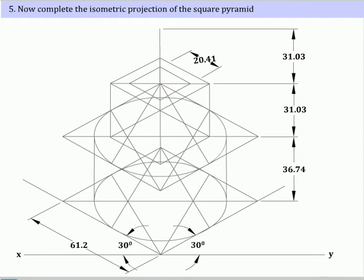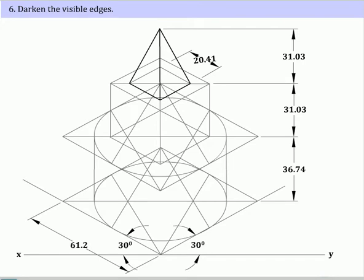Complete the isometric projection of the square pyramid. As the square pyramid is the topmost component, darken its visible edges first. Next, darken the visible edges of the cube. Finally, darken the visible edges of the bottommost solid, which is the cylindrical block.